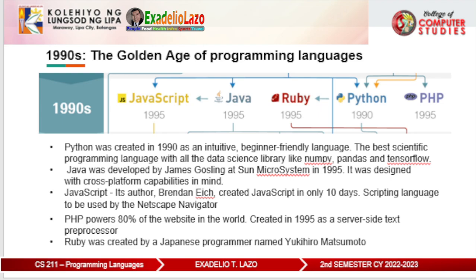Python went on to gain adoption in the scientific computing community, making it the best scientific programming language with data science libraries like NumPy, Pandas, and TensorFlow. Java was developed by James Gosling at Sun Microsystems in 1995, designed with cross-platform capabilities in mind. Its cross-platform promise gave Java advantages over its predecessors C and C++, which require individual compilation for each platform. Java strongly encourages object-oriented programming styles, meaning Java's creators chose not to implement many features C++ already offered, for the sake of clarity and readability.